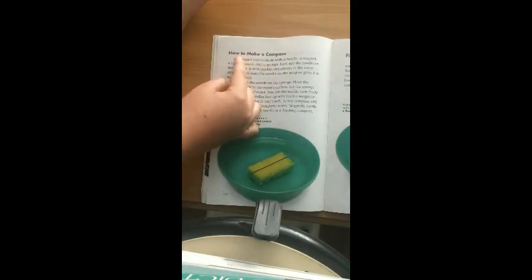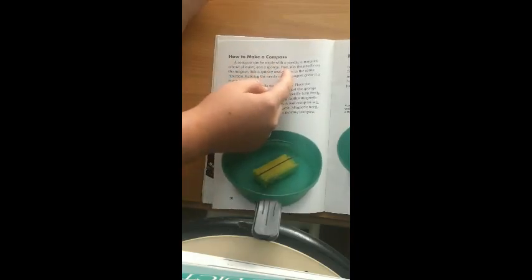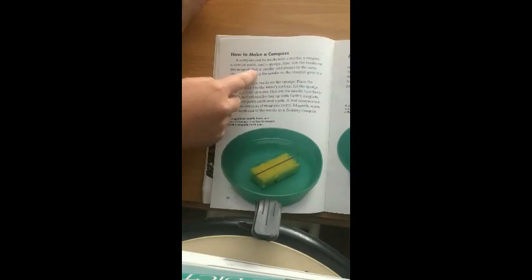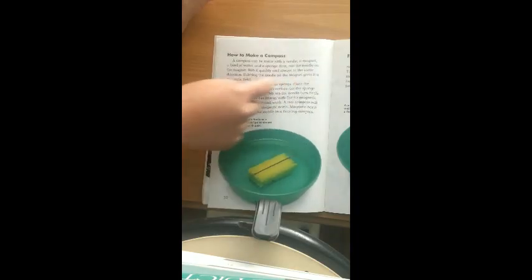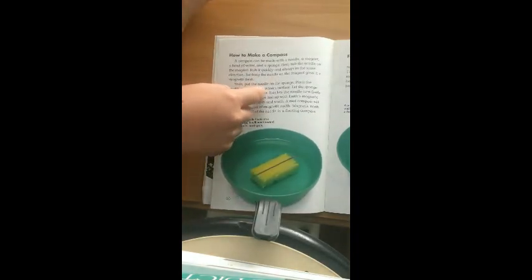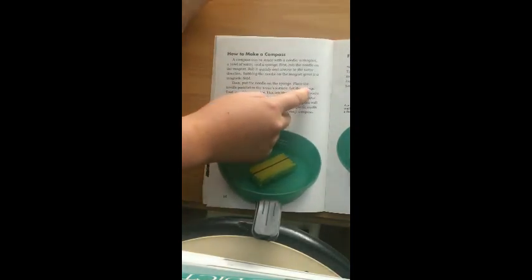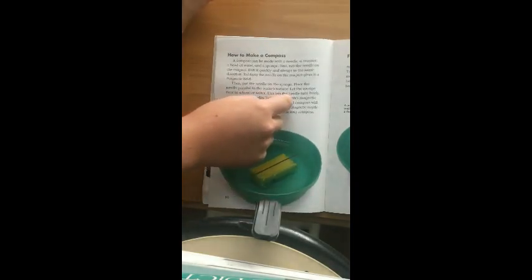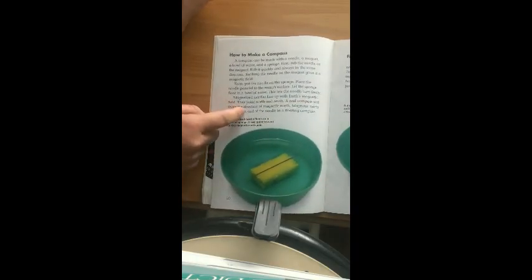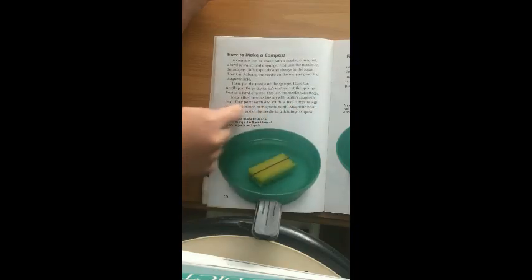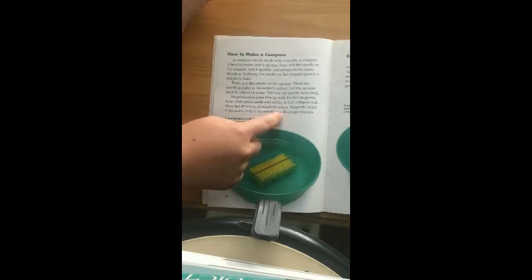How to make a compass. A compass can be made with a needle, a magnet, a bowl of water, and a sponge. First, rub the needle on the magnet. Rub it quickly and always in the same direction. Rubbing the needle on the magnet gives it a magnetic field. Then, put the needle on the sponge. Place the needle parallel to the water's surface. Let the sponge float in a bowl of water. This lets the needle turn freely. Magnetized needles line up with Earth's magnetic field. They point north and south. A real compass will show the direction of magnetic north. Magnetic north is the north end of the needle in a floating compass.